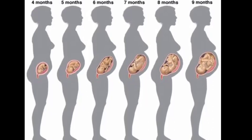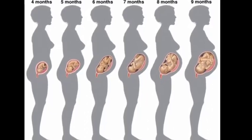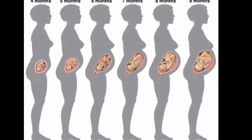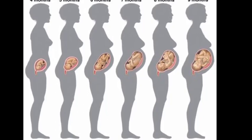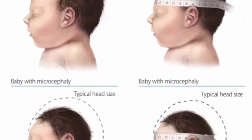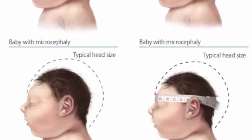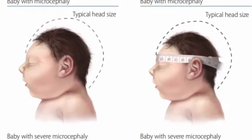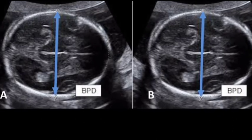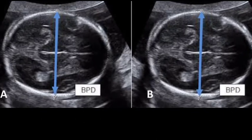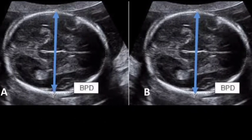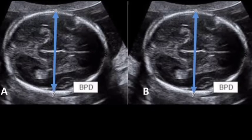Biparietal diameter, aside from being used to estimate gestational age and fetal growth, is also helpful in the detection of fetal abnormalities. The biparietal diameter remains the standard against which other parameters of gestational age assessment are compared.